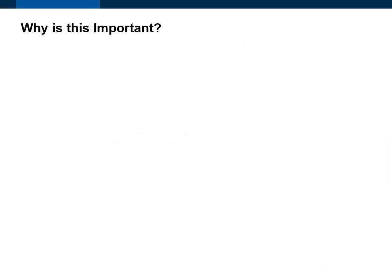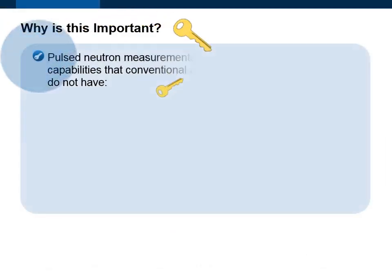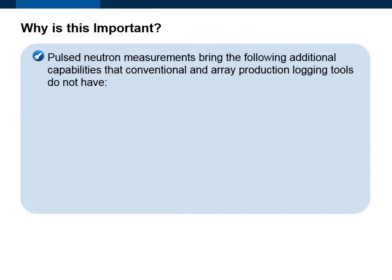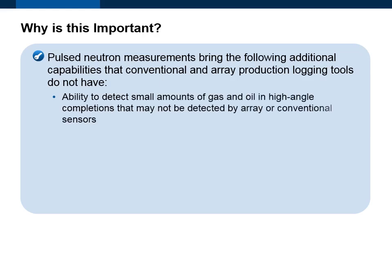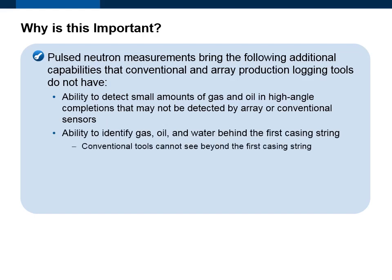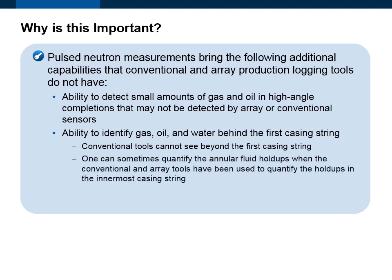Here are the key points about pulse neutron measurements. They bring the following additional capabilities that conventional and array production logging tools do not have: ability to detect small amounts of gas and oil in high angle completions that may not be detected by array or conventional sensors; ability to identify gas, oil, and water behind the first casing string — conventional tools cannot see beyond the first casing string; and the ability to sometimes quantify annular fluid holdups when conventional and array tools have been used to quantify holdups in the innermost casing string.